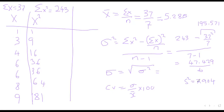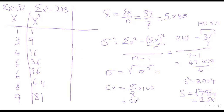If it's a sample, we use S squared for variance. If it's a population, we use sigma squared. When you square root the variance, you get the standard deviation. The square root of 7.904 gives a standard deviation of 2.811. If you divide the standard deviation by the mean and multiply by 100, you get the coefficient of variation (CV).